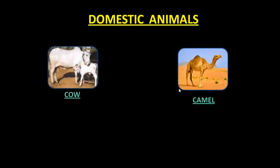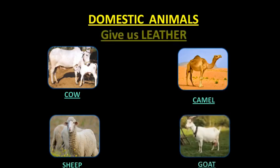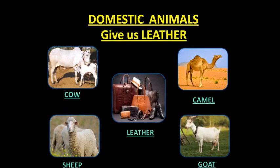Again, some domestic animals like cow, camel, sheep, and goat give us leather. We use this leather to make goods like bags, shoes, belts, hats, and jackets. Some domestic animals give us leather and these are used to make leather items like bags, shoes, belts, hats, jackets, etc.